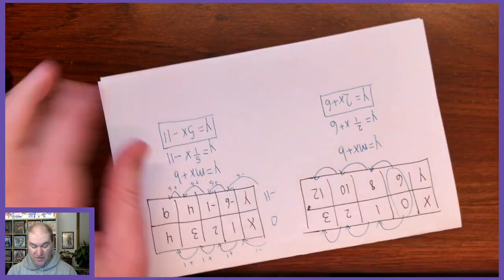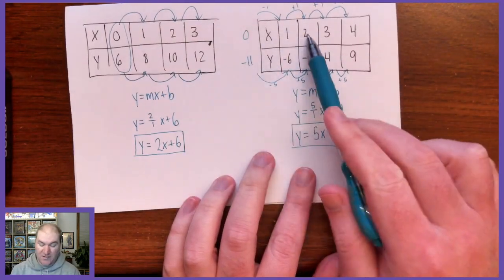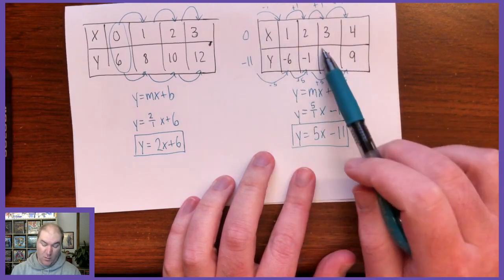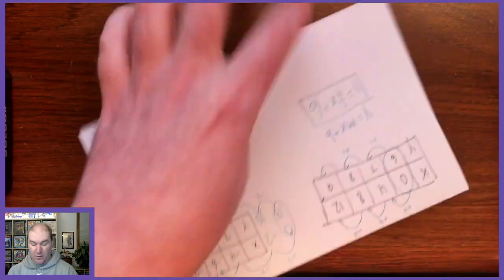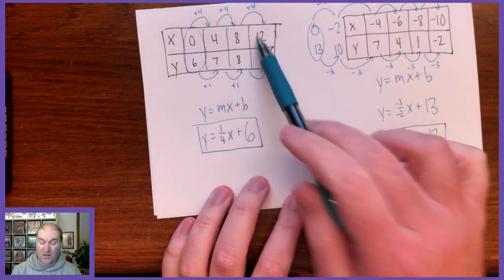So one more time, just to recap, the two new things here is if they don't give you an x of 0, just look on the table for some patterns and work your way backwards or forwards to get your x of 0.